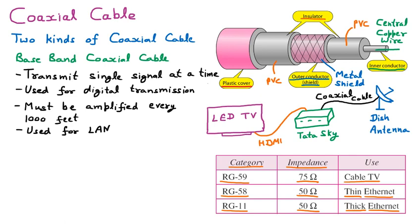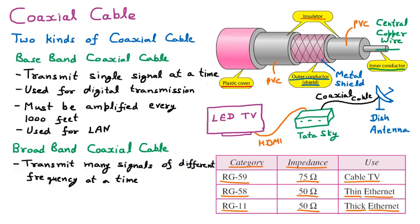Broadband coaxial cable transmits many signals of different frequencies at the same time and is used for analog transmission. The key difference: baseband carries one signal at a time (digital), broadband carries multiple signals simultaneously (analog). Cable TV is the best example of broadband, since many channels like Colors, ZTV, and news channels all come through a single wire.